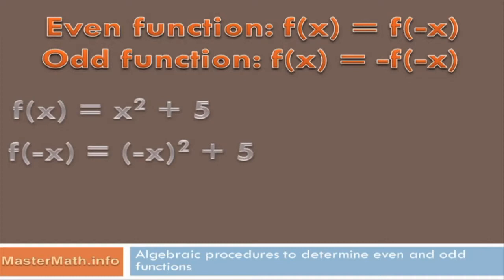Then I can rewrite the equation. The function of minus x equals minus x squared plus 5. Minus x squared is going to be a positive number, so the function of minus x will equal x squared plus 5. That's exactly identical to the function of x, so this is an even function.